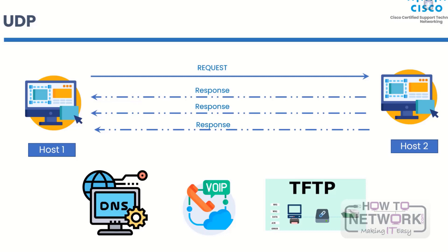UDP doesn't have to connect to the receiver, so it's called connectionless. There are many times when best-effort delivery is better than reliable delivery. A connectionless protocol is good for applications that need to send and receive information quickly without checking that it was received. UDP is also better for services that involve transactions like DNS and DHCP. In transaction-type services, all that happens is a simple question and answer. If the client doesn't get a response, it just sends another query, which is more efficient and uses fewer resources than TCP.